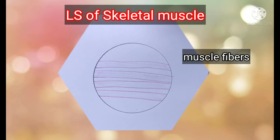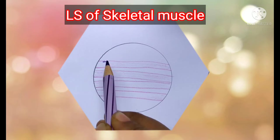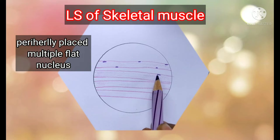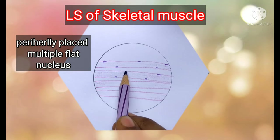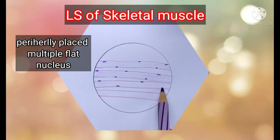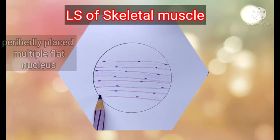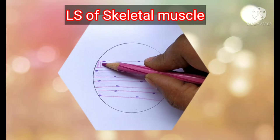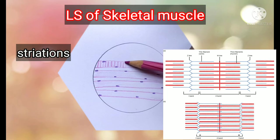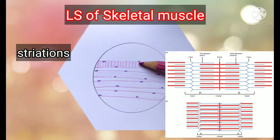The length of muscle fibers can vary from a few millimeters — for example, in the stapedius — to a few meters in the sartorius. They have a peripherally placed nucleus; multiple nuclei are pushed by the muscle fibrils present inside the muscle fiber. These muscle fibrils extend throughout the length of the muscle, and in thin sections we can see striations.